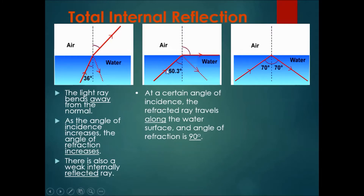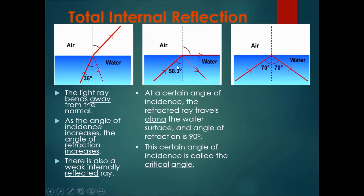At a certain angle of incidence, the refracted ray bends closer and closer to the water surface until at this exact angle, the refracted ray travels directly along the water surface, and the angle of refraction is 90 degrees. This exact angle of incidence is called the critical angle. There is still also a weak internally reflected ray.